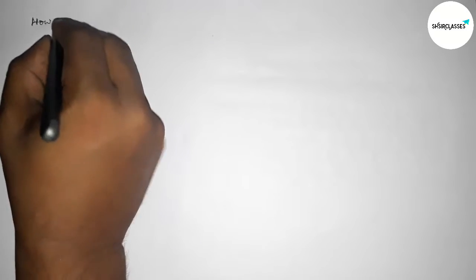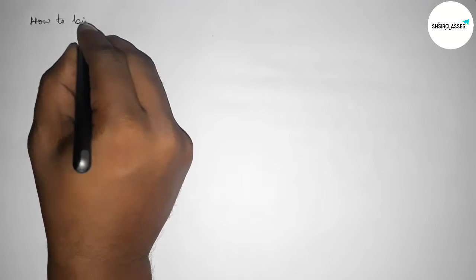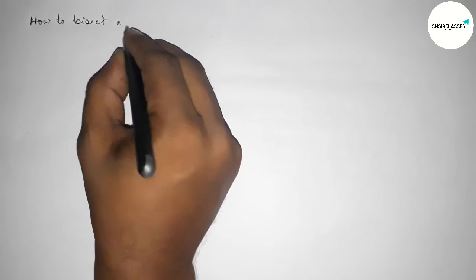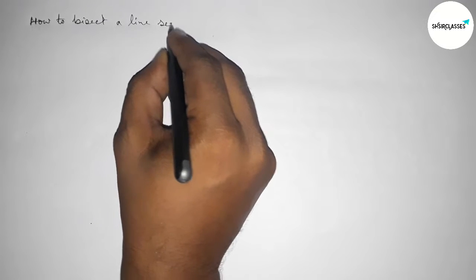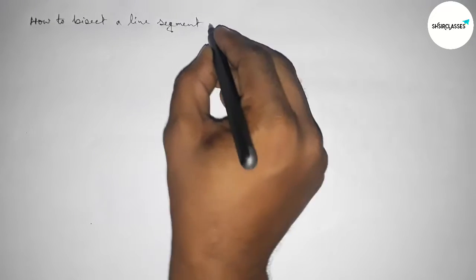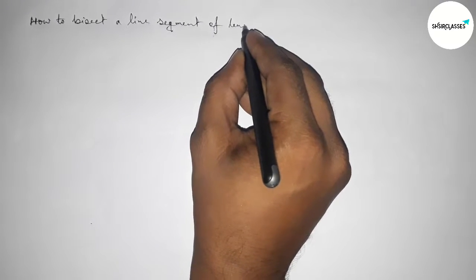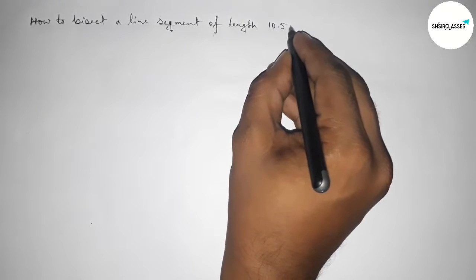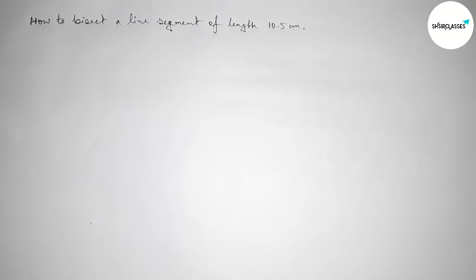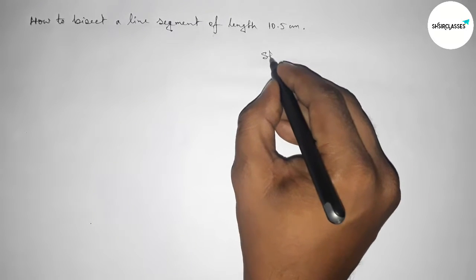Hi everyone, welcome to Essay Share Classes. Today in this video we're discussing how to bisect a line segment of length 10.5 centimeters by using compass. So let's start the video. First of all, leaving here some space to write steps of construction.